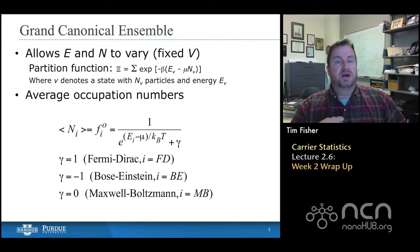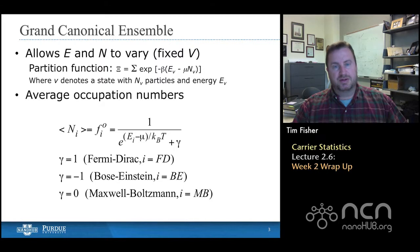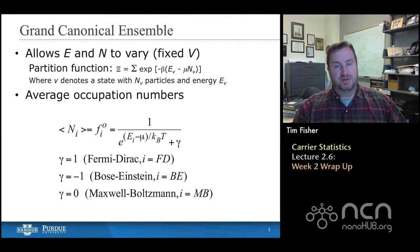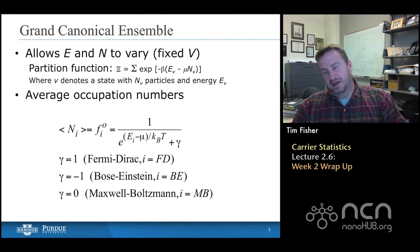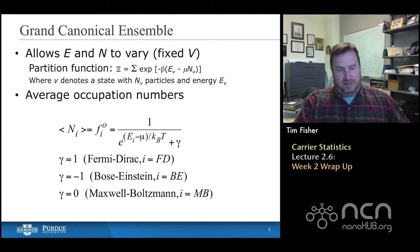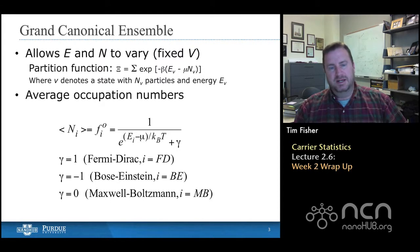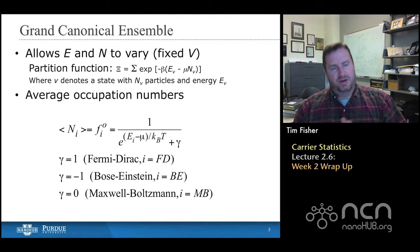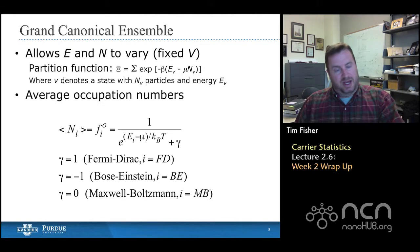We introduced a number of ensembles — particle ensembles — and we talked about how we could allow energy, the number of particles, and the volume to vary or to be fixed. We introduced a partition function for different types of ensembles that's basically a normalizing factor, just to make sure that the probabilities of a state being occupied all add up to one. There are some restrictions on n, the number of particles in a given state, and we call that an occupation number, capital N. The restrictions come from other principles.